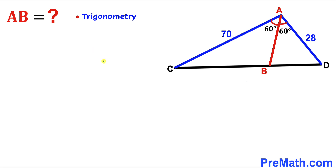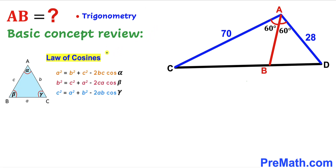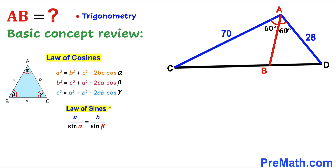Since we will be using trigonometry, let's recall the law of cosines. In triangle ABC, the first form is: A² = B² + C² − 2BC·cos(α). Likewise, we have a second and third form of the law of cosines.